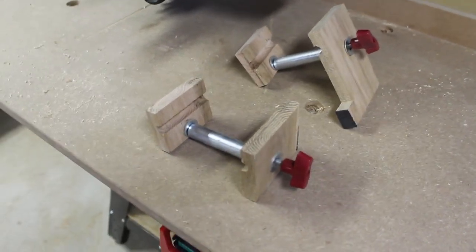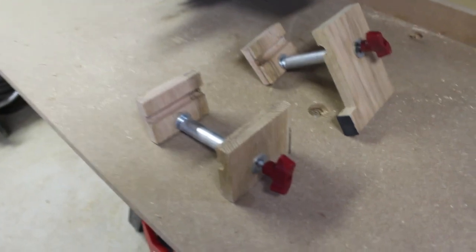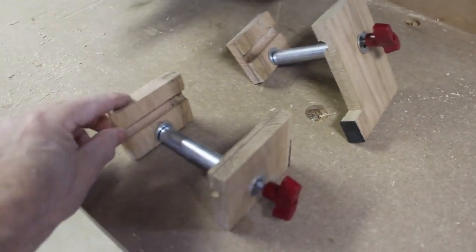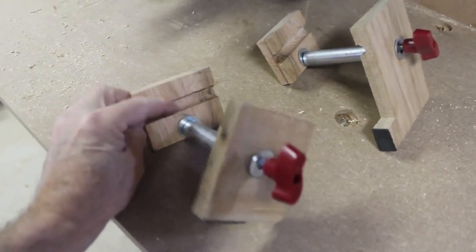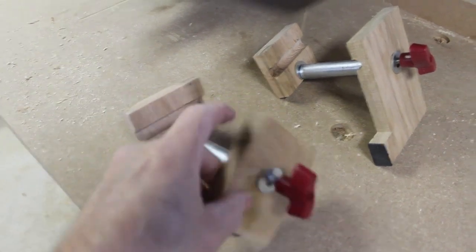I made this stop block setup for the Morady alarm saw. I used a 1.5 inch core box bit to route these channels in this oak.